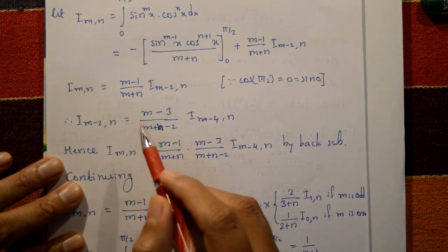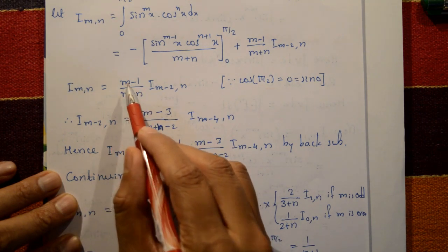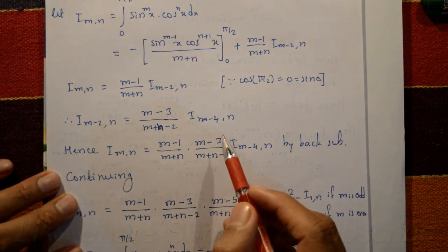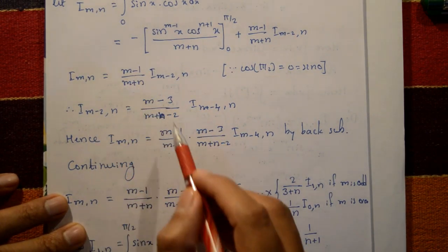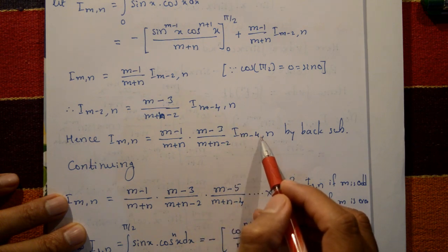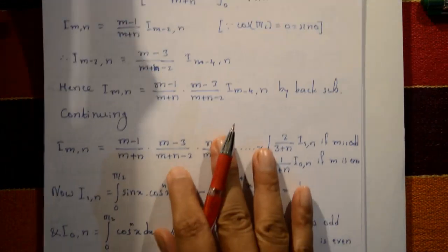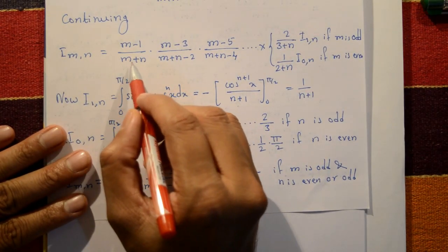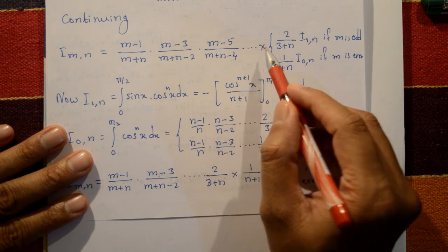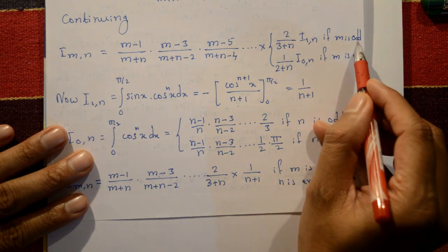By back substitution, replace m with m−2 in the formula: I_(m-2,n) = (m−3)/(m+n−2)·I_(m-4,n). Continuing this recursive process: I_mn = [(m−1)/(m+n)] · [(m−3)/(m+n−2)] · [(m−5)/(m+n−4)] · ... continuing down to either 2/(3+n)·I_(1,n) if m is odd, or 1/(2+n)·I_(0,n) if m is even.